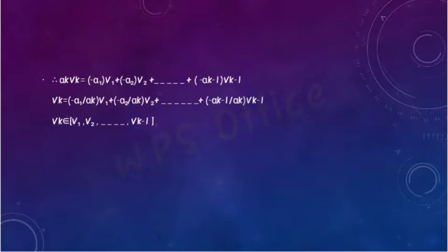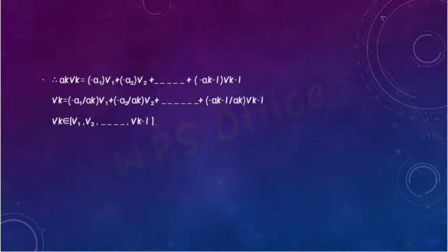Therefore alpha(k)*Vk = -(alpha1*V1 + alpha2*V2 + ... + alpha(k-1)*V(k-1)), so Vk = (-alpha1/alpha(k))*V1 + (-alpha2/alpha(k))*V2 + ... + (-alpha(k-1)/alpha(k))*V(k-1). Thus Vk belongs to the span of {V1, V2, ..., Vk minus 1}.